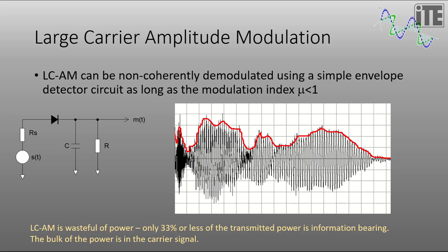Large carrier AM can be non-coherently demodulated using a very simple envelope detector circuit shown here. As long as the modulation index μ is less than 1. So just by putting the received signal through a diode and then through a smoothing circuit, which is this resistor and capacitor here. There's different ways of building that smoothing circuit. We get the original message signal out. Now, in actual fact, the message signal would be shifted in terms of the vertical axis with DC. It would still have a DC offset, but we can simply put another capacitor in here and remove the DC.